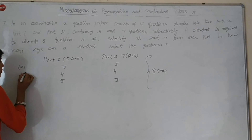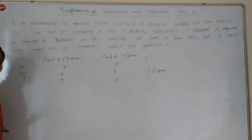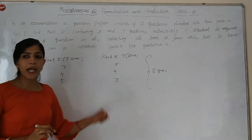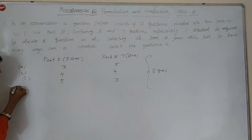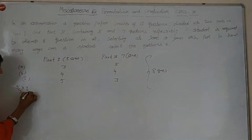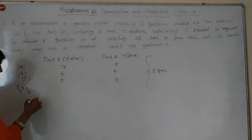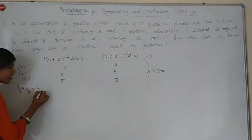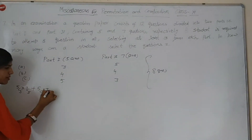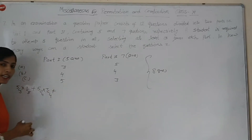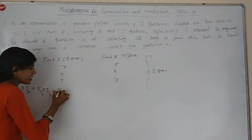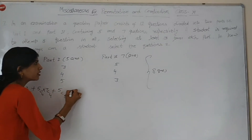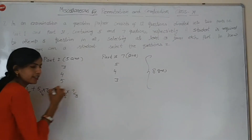Yeh B part ho gaya, yeh C part. Ab aap isko likhoge: Part A mein kya bana? Case 1 — 5 mein se 3 liye, aur 7 mein se 5 liye. Second case mein: 5 mein se 4 liye aur 7 mein se 4 liye. Third case mein: 5 mein se 5 liye aur 7 mein se 3 liye.